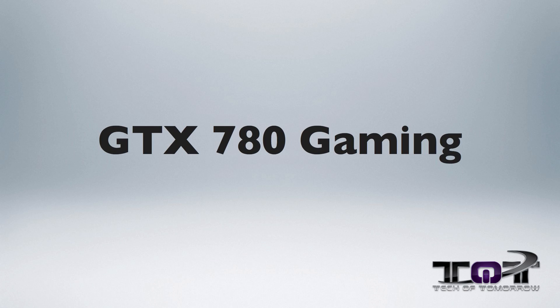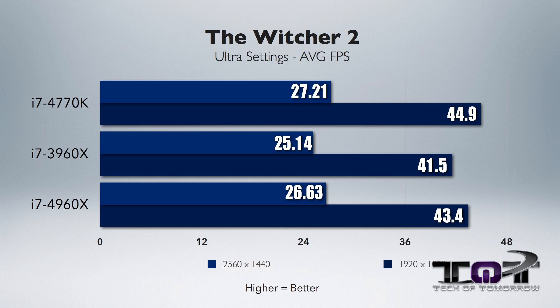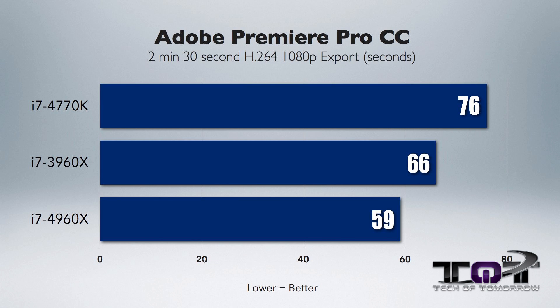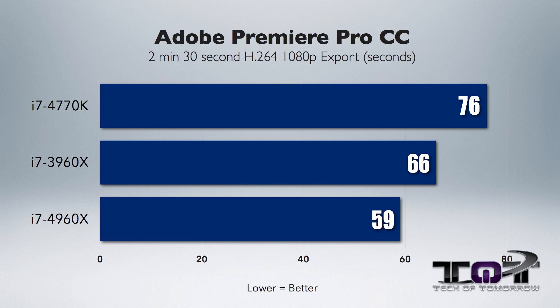When we get into the scoring, you can see that pretty consistently in gaming, the Haswell can go head-to-head. And actually in PC Mark 7, oddly enough, the Haswell actually scores better than the Ivy Bridge E. But when it comes to productivity — saving time, crunching numbers — that's when you can see in the test scores that the Ivy Bridge E jumps ahead. It has a lot better performance for productivity, so if you're looking to save time, you're going to want to be looking at the Ivy Bridge E.